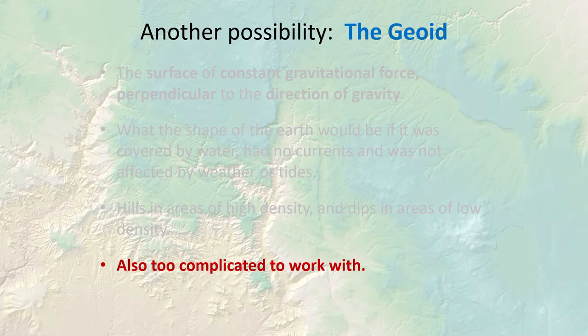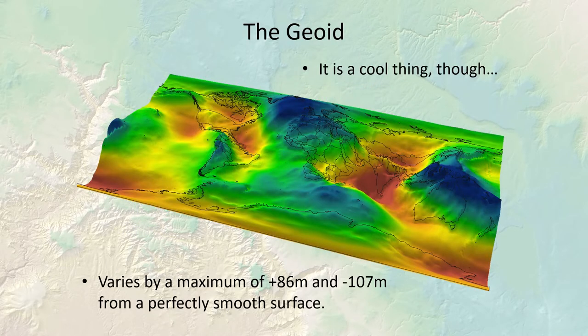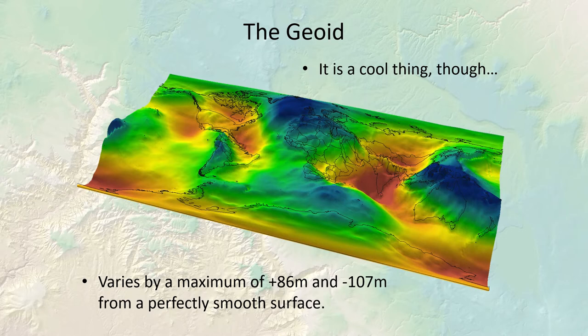The geoid is also really complicated to work with — not quite as complex as the true topographic surface, but still pretty rough. This map shows how the geoid changes across the surface of the planet. There's an area of real low density south of India and high density north of Australia, meaning the actual ocean surface rises by almost 200 meters. Most GPS systems do have an option to use the geoid when calculating elevation — elevation above mean sea level uses the geoid.